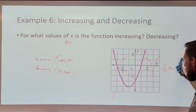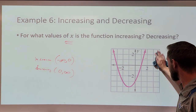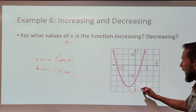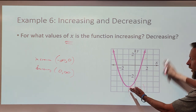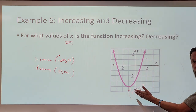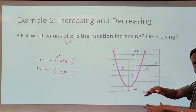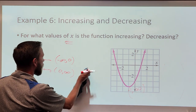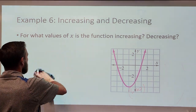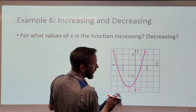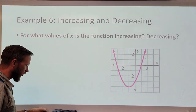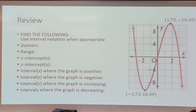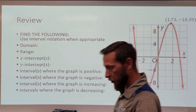For what values is this function increasing? It's going to be increasing after the vertex, looking from left to right — increasing from negative 1 to positive infinity. This negative 1 is in parentheses because it doesn't include negative 1. At negative 1, that's the minimum; it's not increasing or decreasing there. Tell me where it's decreasing — in interval notation or set builder notation, whichever you'd like. Do this one for me on example 6, which puts it all together: domain, range, intercepts, where it's positive, negative, increasing, and decreasing.